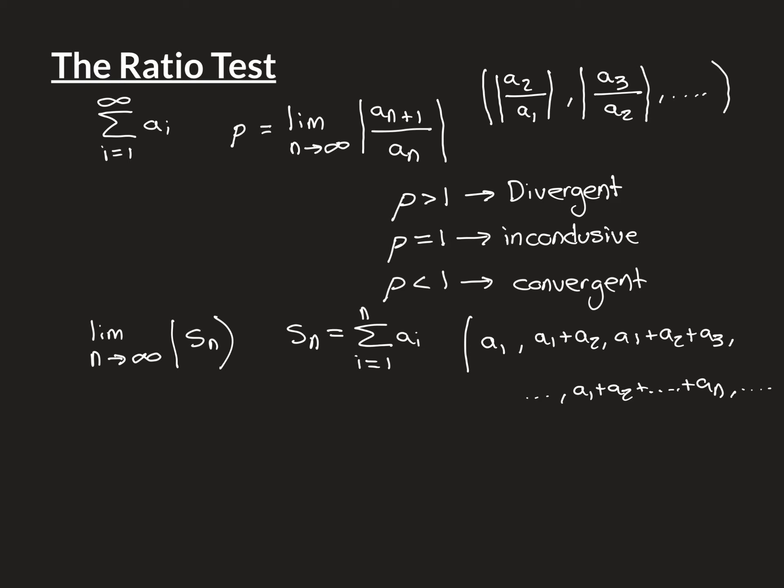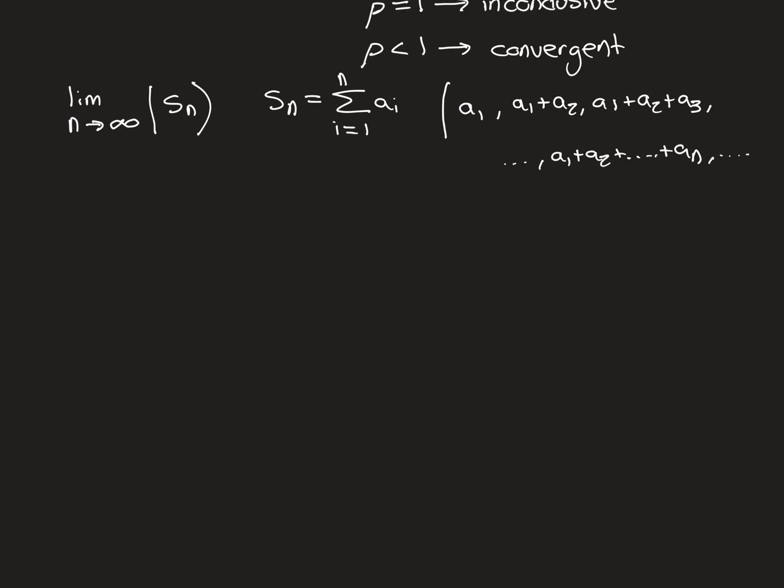We can apply the Cauchy criterion for convergence of an infinite sequence. In the real numbers, Cauchy sequences and convergent sequences are one and the same — all convergent sequences are Cauchy and all Cauchy sequences are convergent. So this sequence of partial sums will have to be a Cauchy sequence. We can then express what that means in terms of the actual terms of the series, giving us the Cauchy criterion for convergence of an infinite series.